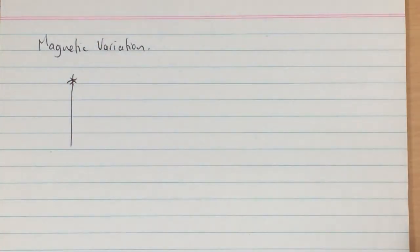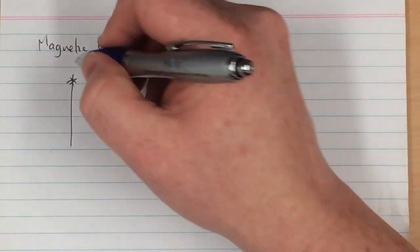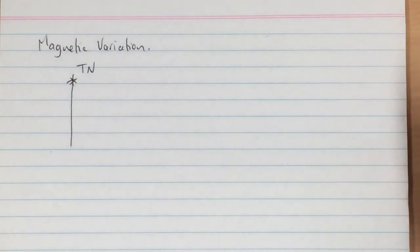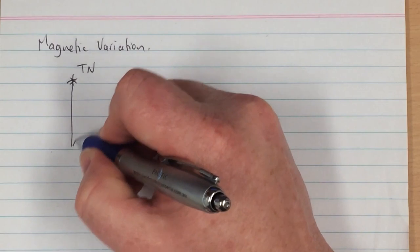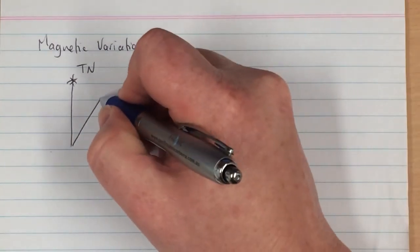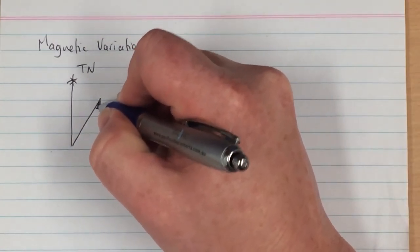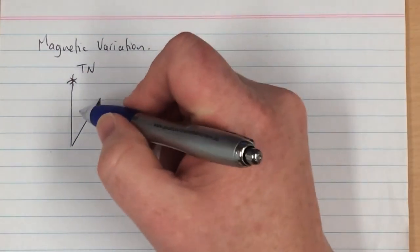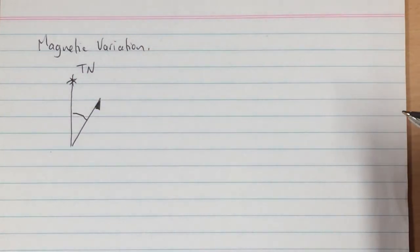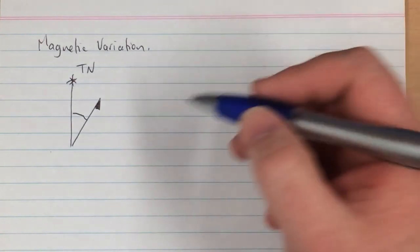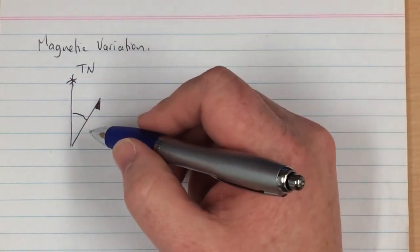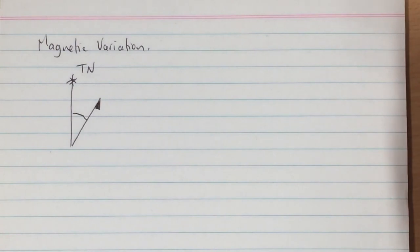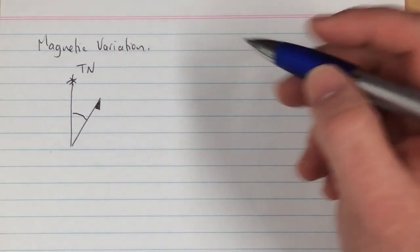So on a map straight up is always what's referred to as grid north and true north is usually somewhere around that location as well. We're just going to be looking at variation between true north and magnetic north. So you'll always see on a map a symbol that looks like this where the magnetic variation is given in relation to true north.